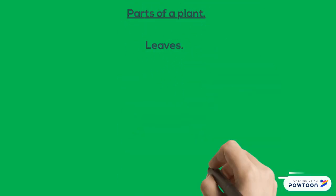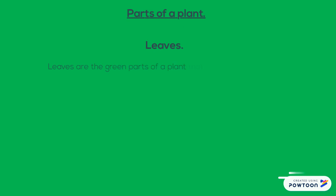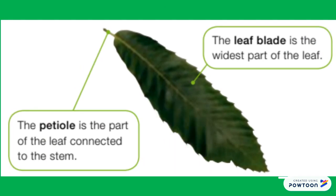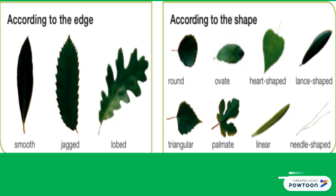We also have to talk about leaves. Leaves are the green parts of a plant that grow from the stem or the branches. Plants make their own food in the leaves. Leaves have two parts: the petiole and the leaf blade. Deciduous plants lose their leaves in autumn. Evergreen plants have leaves all year round. Here you can see the parts of a leaf: the petiole, which is the part of the leaf connected to the stem, and the leaf blade, which is the widest part of the leaf.